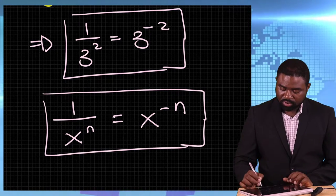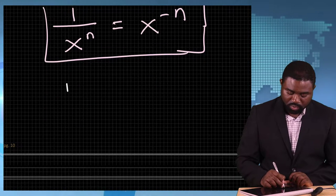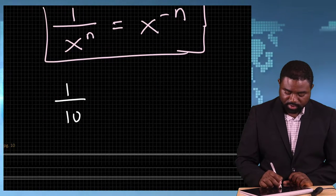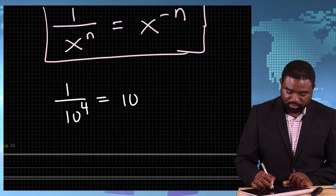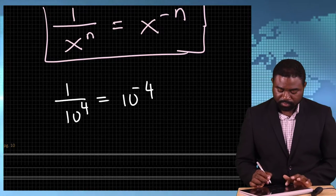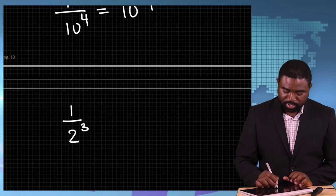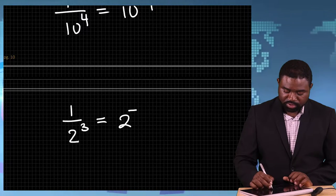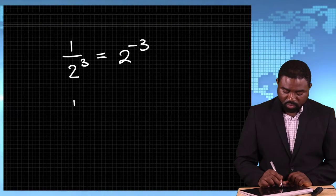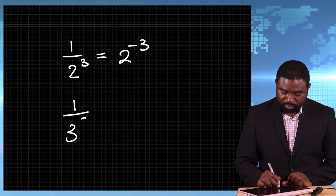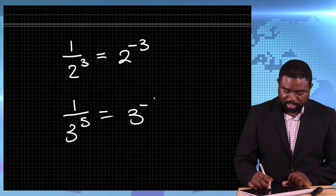This we call negative powers. For example, 1 over 10 raised to the power 4 is equal to 10 raised to the power negative 4. Again, 1 over 2 raised to the power 3 is equal to 2 raised to the power negative 3. Similarly, 1 over 3 raised to the power 5 is equal to 3 raised to the power negative 5.